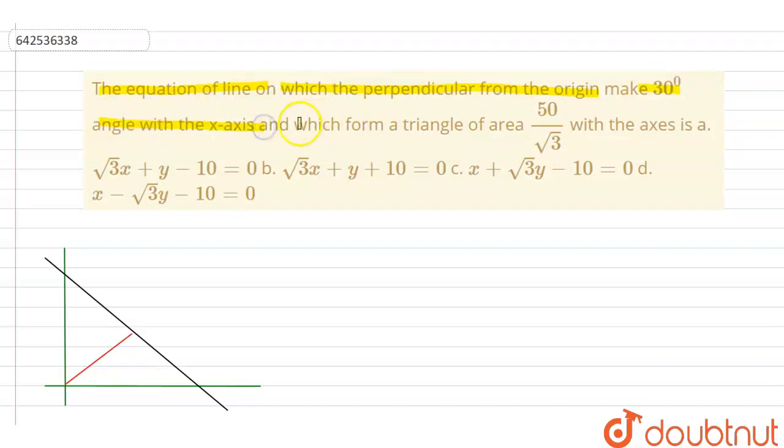First option, root 3x plus y minus 10 equals 0. Second option, root 3x plus y plus 10 equals 0. Third option, x plus root 3y minus 10 equals 0. Fourth option, x minus root 3y minus 10 equals 0.